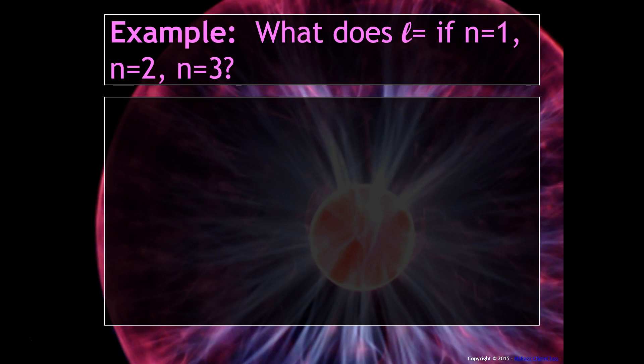For example, what does L equal if N equals 1, N equals 2, and N equals 3? So when N equals 1, L equals 1 minus 1, which is really 0. Or what you could say to yourself is when N equals 1, there's only one type of sublevel, and that's an S.